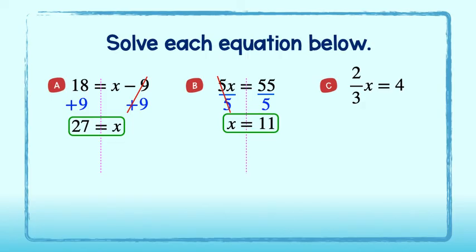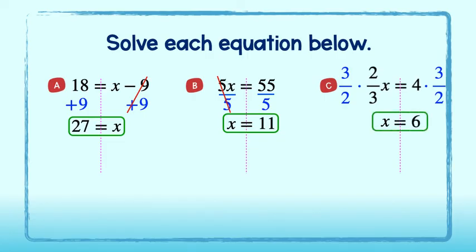And lastly, in part c, we can multiply by the multiplicative inverse or 3 halves to get 1x on the left, or just x. Multiplying by 3 halves on the right gives us 6. We see that x is equal to 6. Good job!